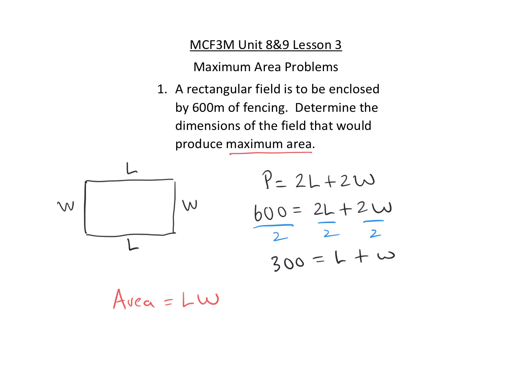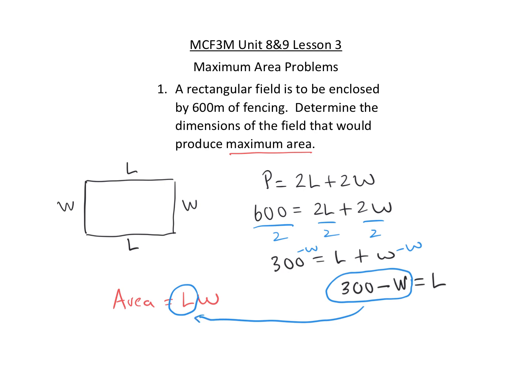We can't solve for area with two variables — we can't have both length and width — so we want to replace one of them. We'll take our perimeter formula and isolate for L by subtracting W from both sides, giving us length equals 300 minus W, and then replace length in the area formula with that expression.